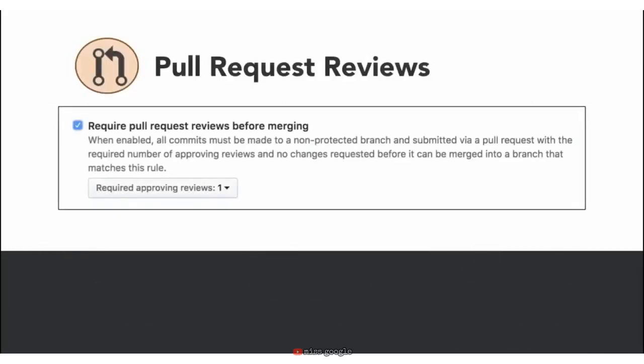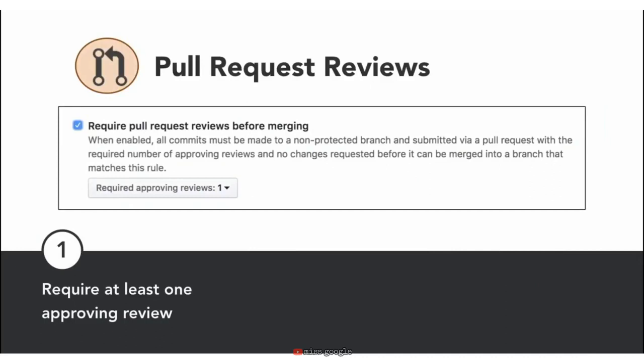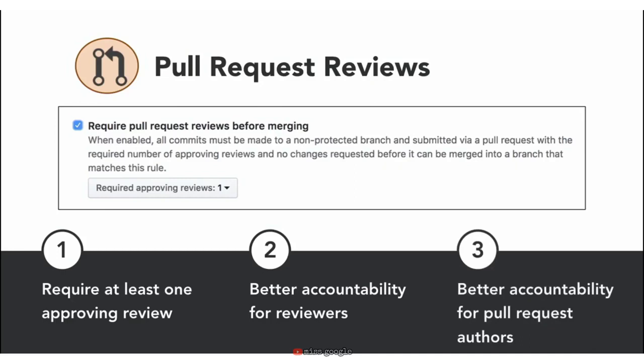Another important branch protection is requiring that at least one approving review is given on a pull request before that pull request can be merged into the base branch. You can also add a person or a specific team of individuals that can dismiss these pull request reviews. For example, you can have a branch protection to require any branch containing the word 'release' to have at least two request reviews before merging. Having this branch protection requires every pull request to have some level of code review and a discoverable history of who approved it.